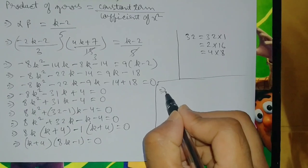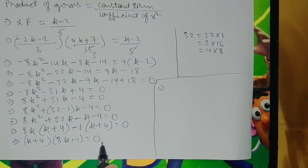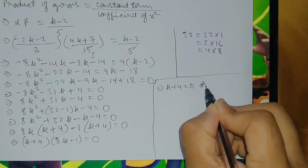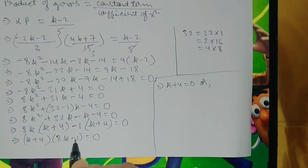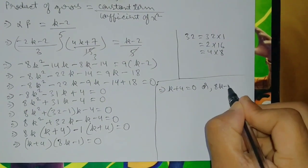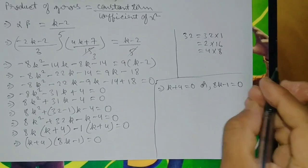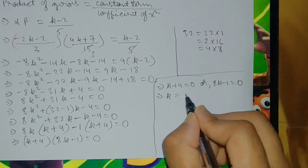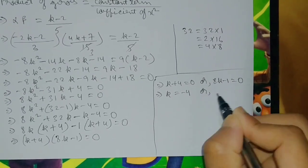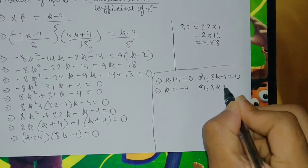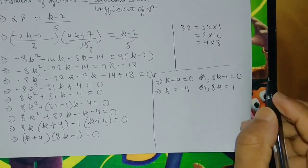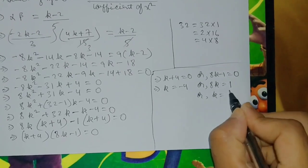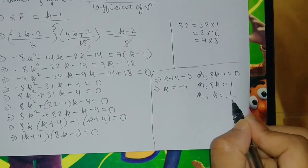This implies k plus 4 equals 0, giving k equals minus 4, or 8k minus 1 equals 0, giving k equals 1 over 8. These are the two values of k.